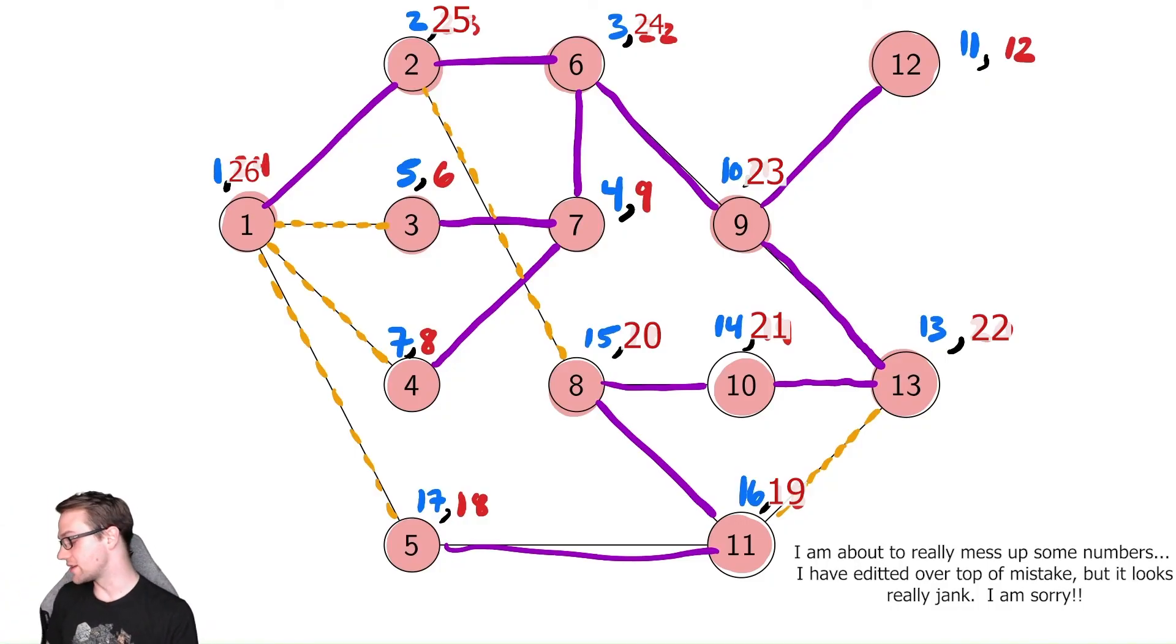So those are our discovery and finishing times. Discovery time being in blue, finishing time being in red. So this is an example of how depth-first search works. You can often do this a little bit quicker than I did here by sort of cutting out some of the steps that are algorithmic that aren't necessarily required to be done by hand. But this is sort of how the algorithm would walk through this problem.